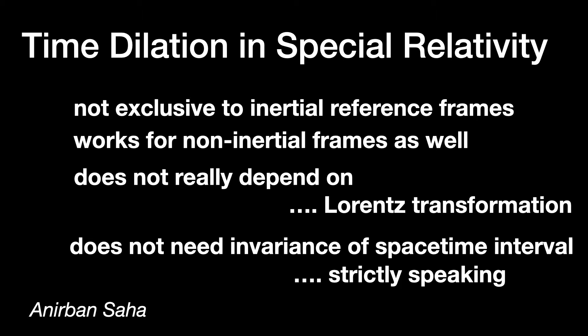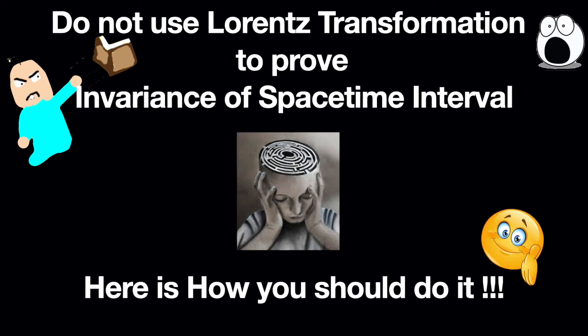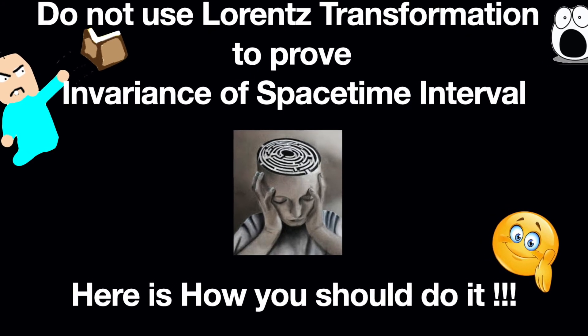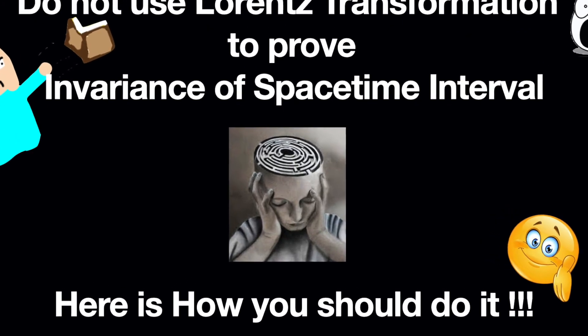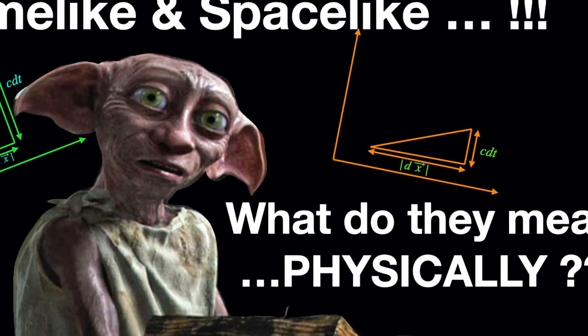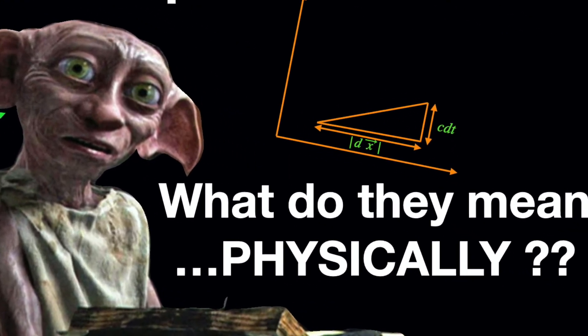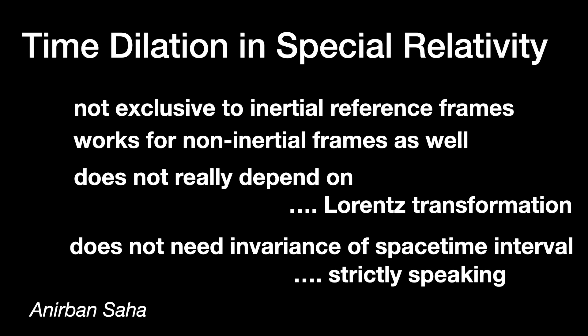The mathematical structure of the space-time interval — how it is defined for any given pair of events, infinitesimally close or at a finite separation, and the kind of standard mathematical notations that are used — all these have been explained in two of my earlier videos. Links are in the description of this video and I will also put them up in the i-button at the right places. So let's get started.